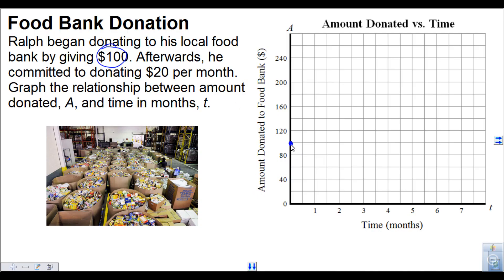Now after one month he gave $20 more, so at one month we can go up to $120. After two months we can then go up another $20 to $140. After another month we can go up to $160, and so on. We can continue that pattern.